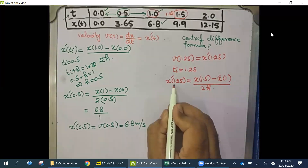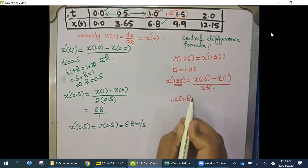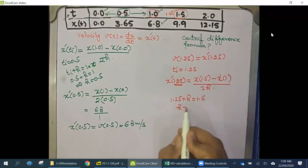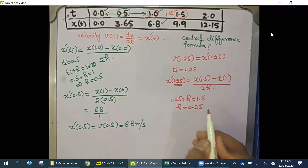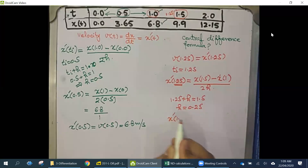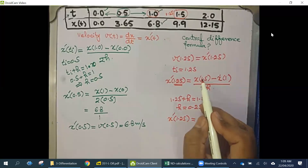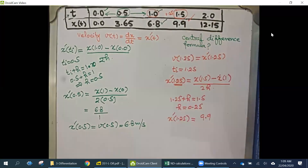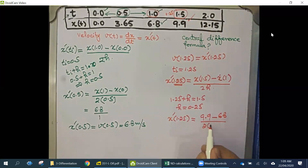To calculate h, we use the same approach: t_i + h must equal the future value 1.5. Since t_i = 1.25, h = 0.25. Now I have h and the values x(1.5) = 9.9 and x(1) = 6.8. So x'(1.25) = (9.9 − 6.8) / (2 × 0.25).